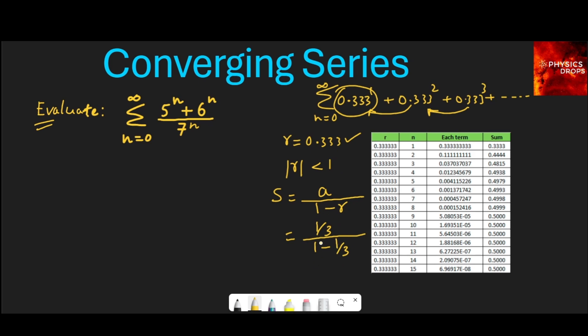So this is 1/3 upon 2/3, which is 1/3 times 3/2, which is 1/2. 1/2 is the sum of this geometric series.